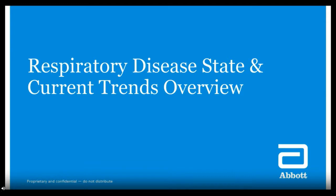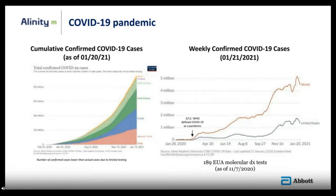Regarding disease state and current trends: as of January 20, 2021, the world has seen almost 100 million cumulative COVID-19 cases. Ever since WHO defined COVID-19 as a world pandemic in March, there has been an ever-increasing number of confirmed cases weekly. Since September 2020 to January 2021, weekly confirmed cases more than doubled. FDA, as of November 7, 2020, authorized 189 molecular tests for emergency use only in the United States.